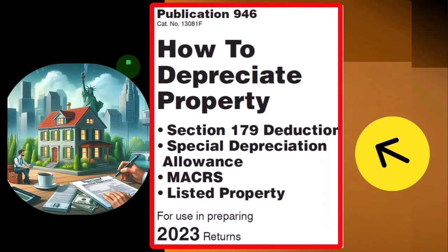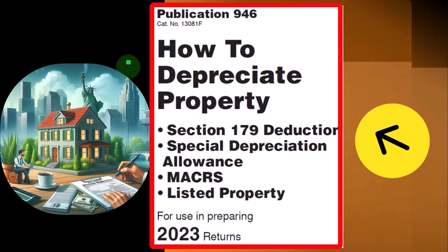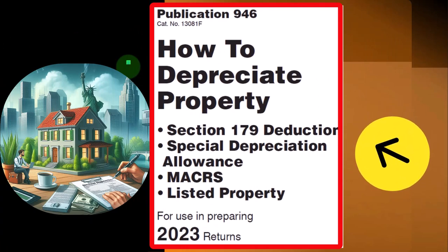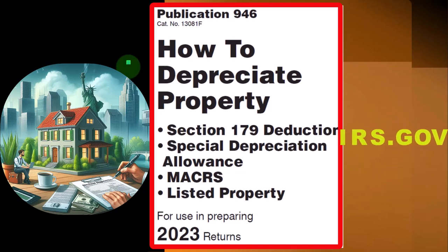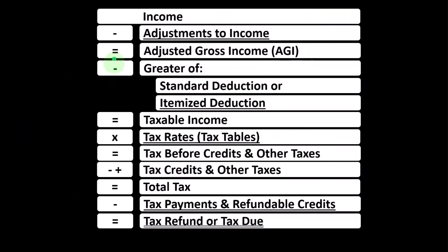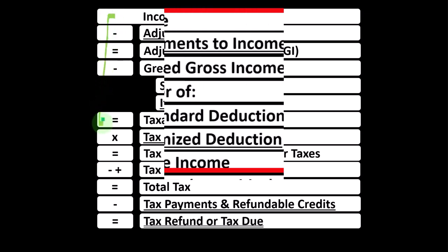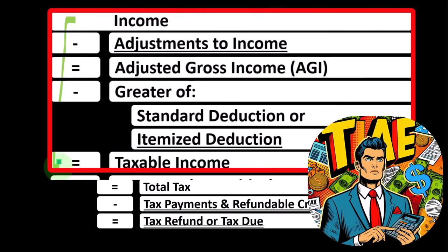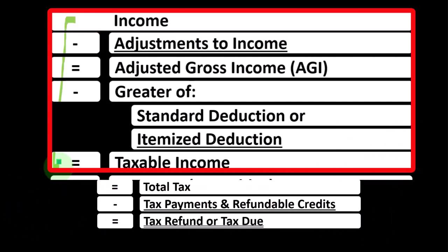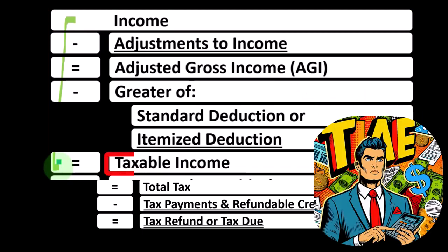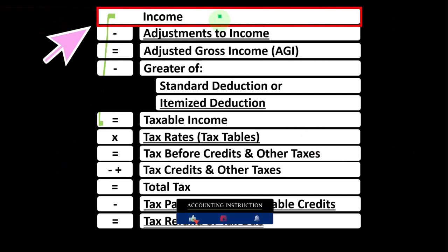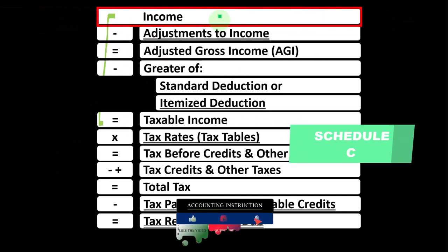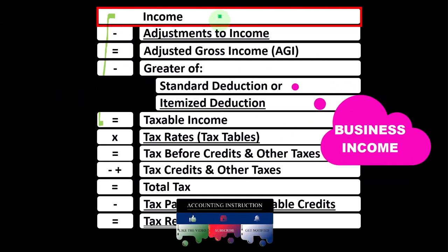This information can be found in Publication 946, How to Depreciate Property — Section 179 Deduction, Special Depreciation Allowance, and Listed Property, Tax Year 2023, available at irs.gov. In the first half of the income tax formula — basically a funny income statement — we have income minus various deductions resulting in taxable income. The Schedule C rolls into line 1 income of the formula, and itself is an income statement with business income minus business expenses.